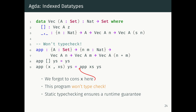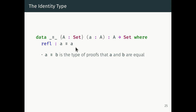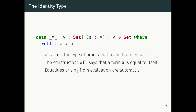The high-level point is that static type checking ensures a runtime guarantee. We were able to guarantee at runtime that when we call append, the result will be of the length that is the sum of the lengths of the two arguments, and type checking guarantees this runtime property holds. One thing that's central to mechanizing mathematics in dependent type theory is the identity type — how you represent equality in Agda. We can introduce a data type and say: the constructor refl has the type 'a is equal to itself.' So a equals b is the type of proofs that a and b are equal, and refl says a term is equal to itself. The equalities arising from evaluation are automatic.